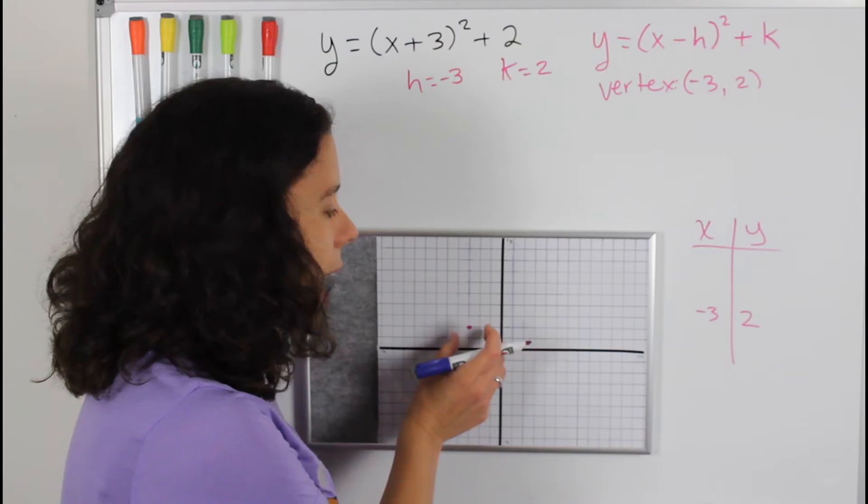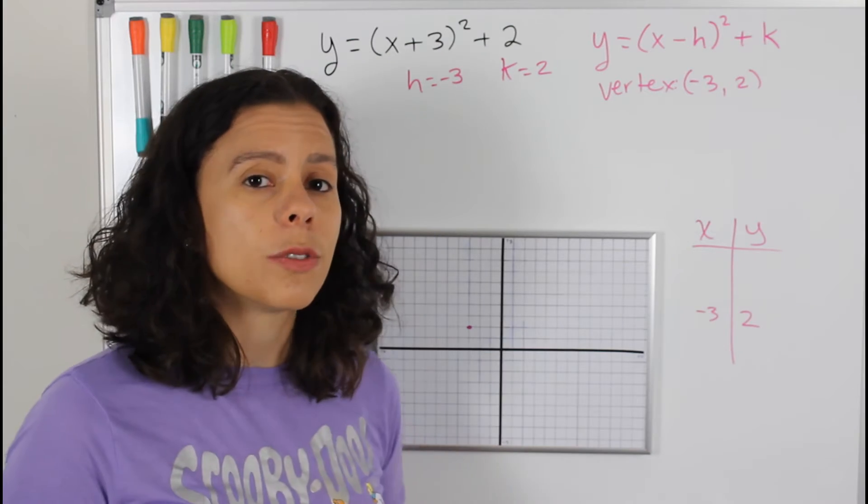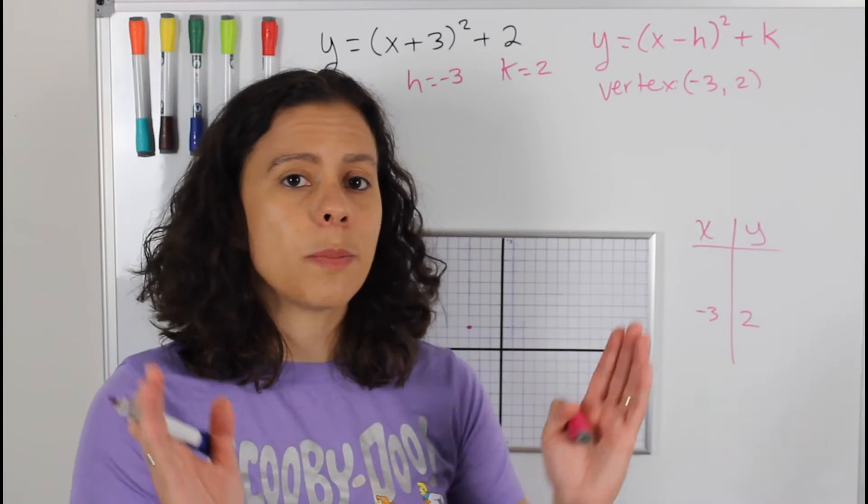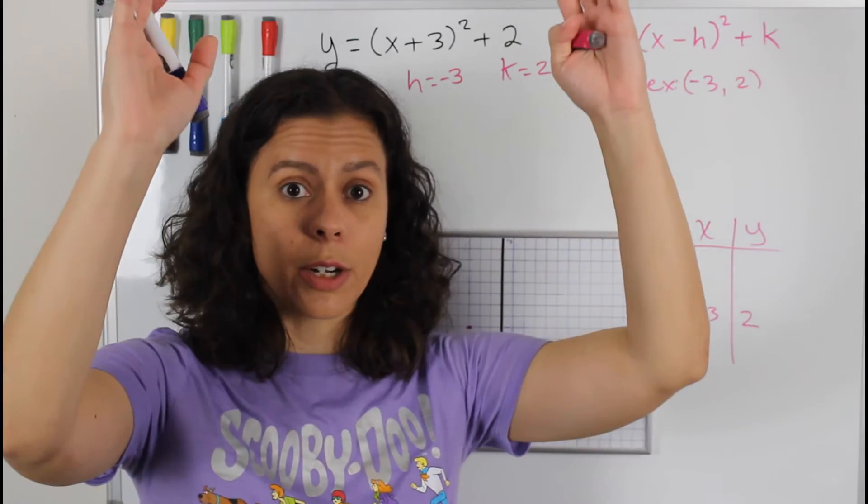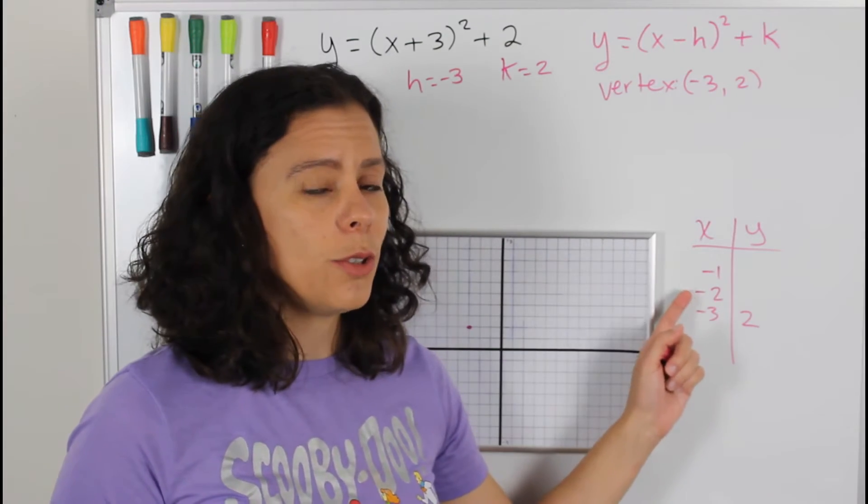So what numbers should I use? Normally, I try to stick as close as possible to the vertex because given that this is a parabola, it's probably going to go up very quickly. So I'm going to choose negative two and negative one.